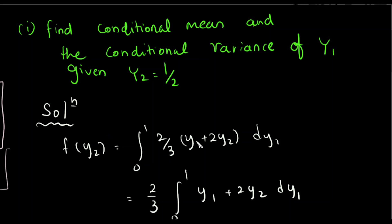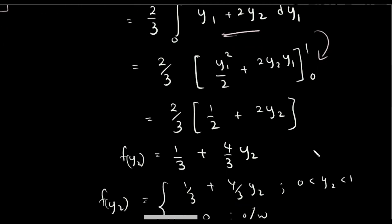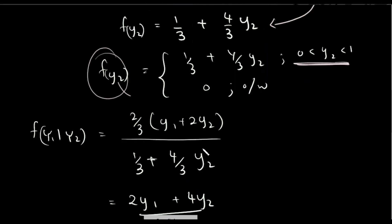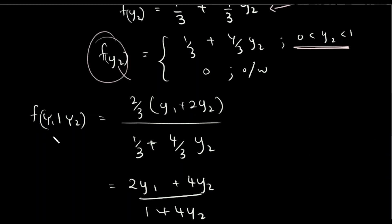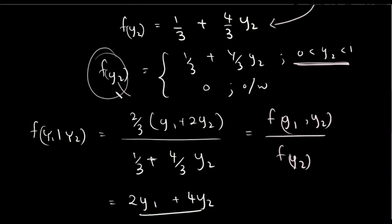To find the conditional PDF, we divide the joint density by the marginal probability density function. The marginal probability density function of y2 is computed by integrating out y1. The conditional probability density function is f(y1, y2) divided by f(y2).